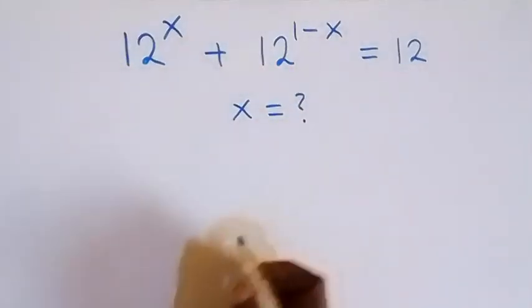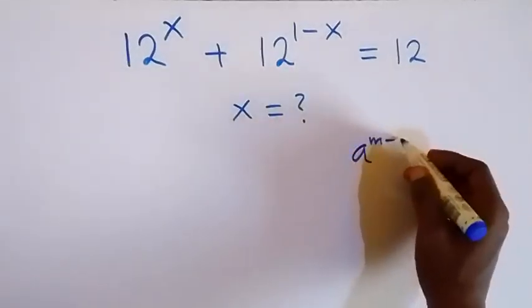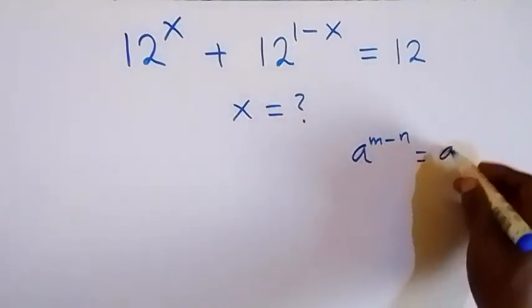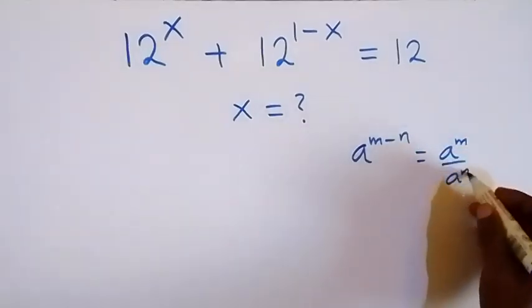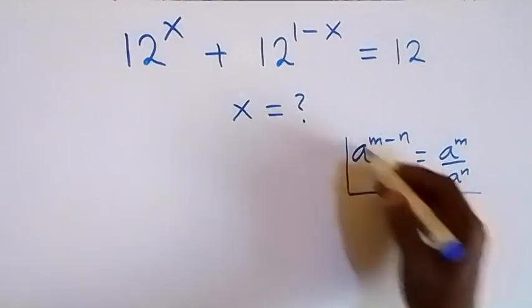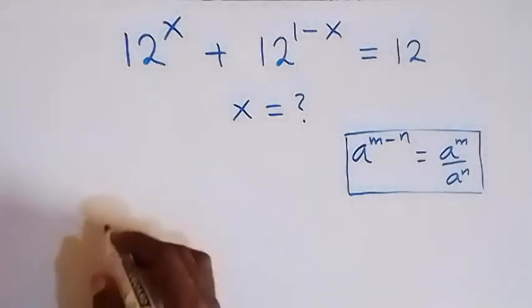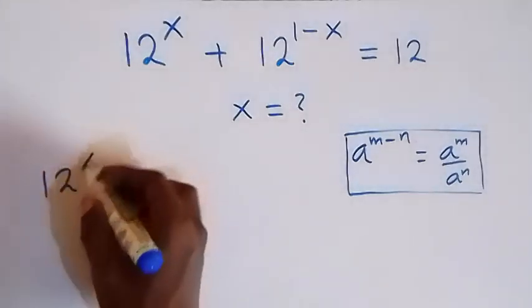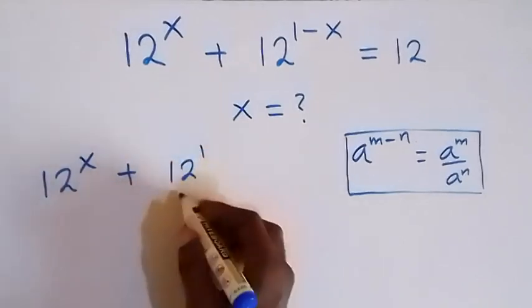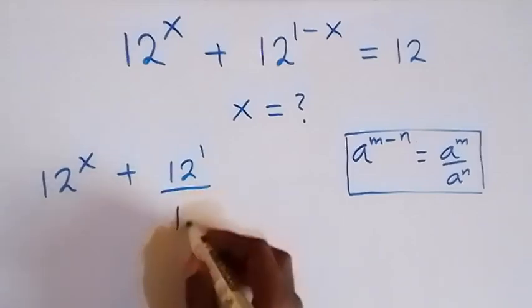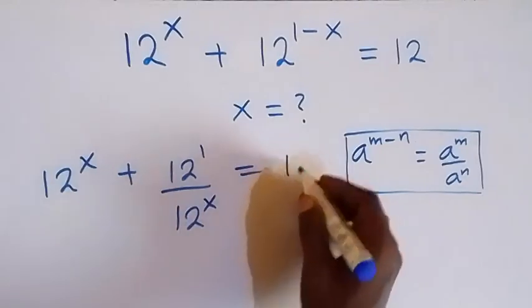We can rewrite this using the law of indices, where we have a raised to power m minus n. We can write this as a raised to power m over a raised to power n. So when we apply this, this gives us 12 raised to power x plus 12 raised to power 1, over 12 raised to power x, and this equals 12.